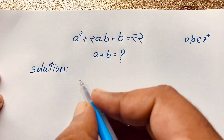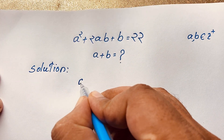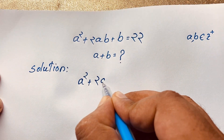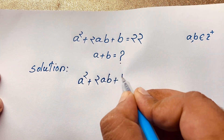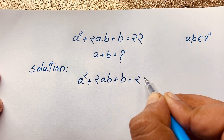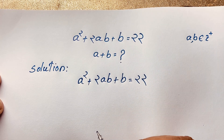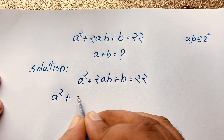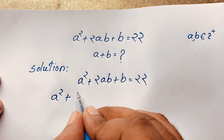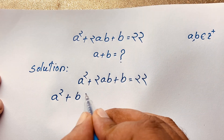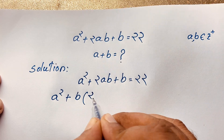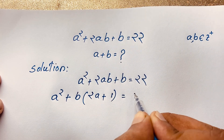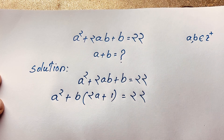Our equation is a squared plus 2ab — note it is not b squared — it is just b, equal to 22. Now, looking at a squared plus 2ab, you can see that ab is a common factor. Dividing out ab gives a factor of 2a plus 1, which equals 22.